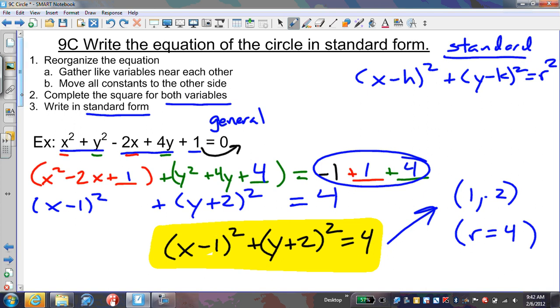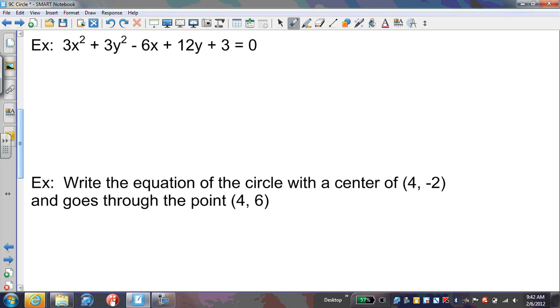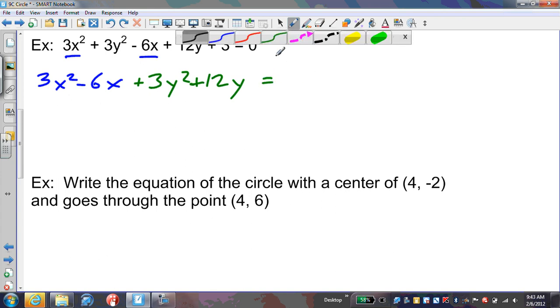Let's look at another example. On this one, we have to factor out a 3 first. Putting the x's together: 3x² - 6x. Putting the y's together: 3y² + 12y. And the 3 goes on the other side as negative 3.